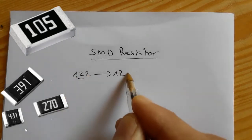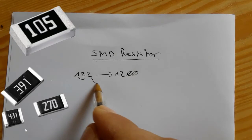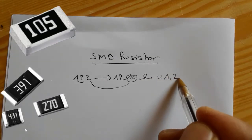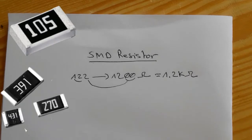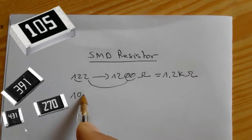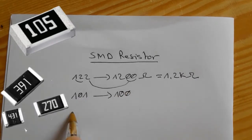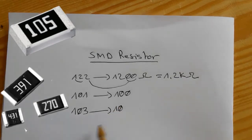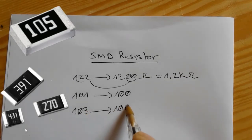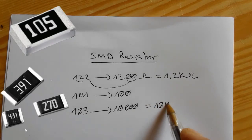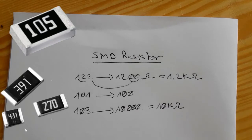If you find the number 122, the third number means the number of zeros. So 122 means 1200 ohms, which equals 1.2 kilo-ohms, since one kilo-ohm equals 1000 ohms. For 101, the third digit adds one zero after 10, giving 100 ohms. For 103, we add three zeros to get 10,000 ohms or 10 kilo-ohms.